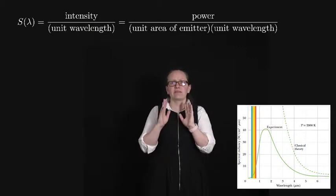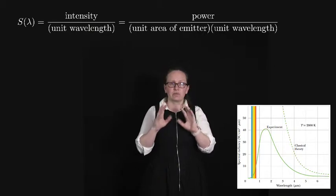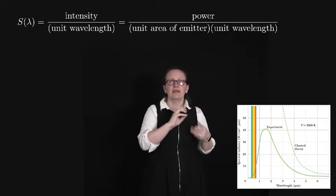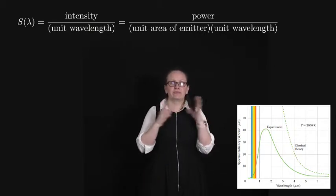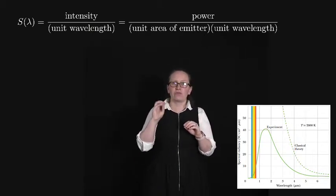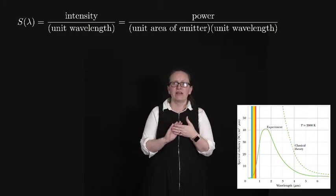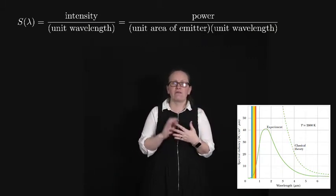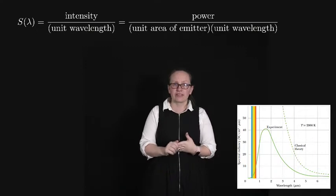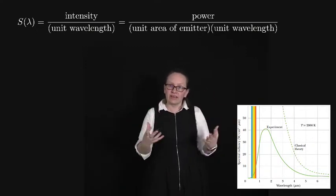You can see a plot of the spectral radiance versus wavelength curve here. It shows the experimental results for a blackbody at a temperature of 2,000 Kelvin. To give you an idea of how hot that is, the Sun has a temperature of 5,800 Kelvin. So this is cooler than the Sun but still incredibly hot.